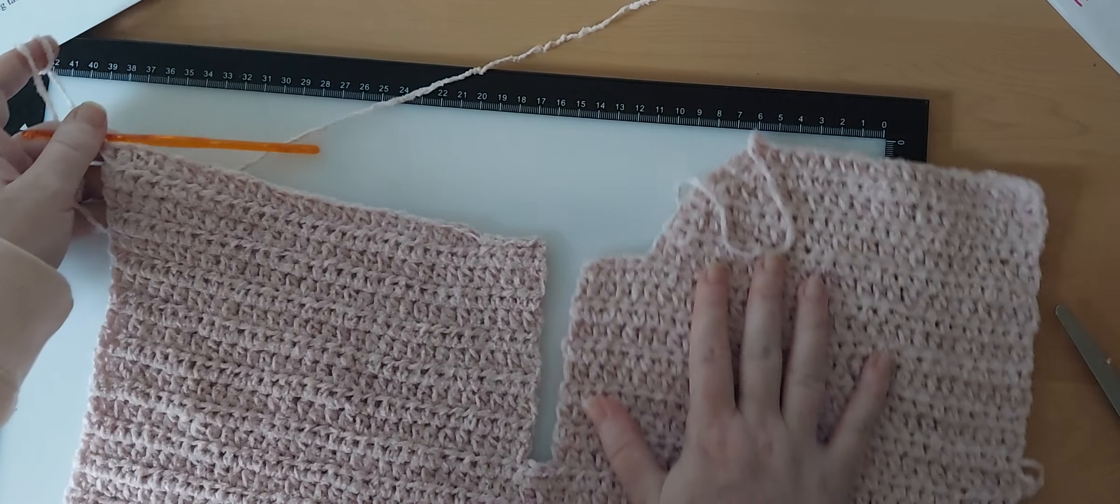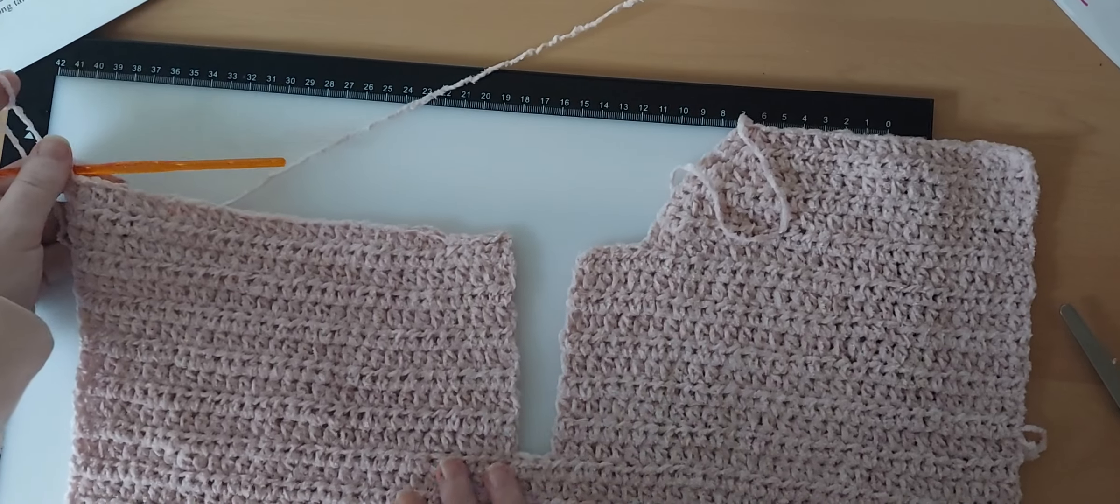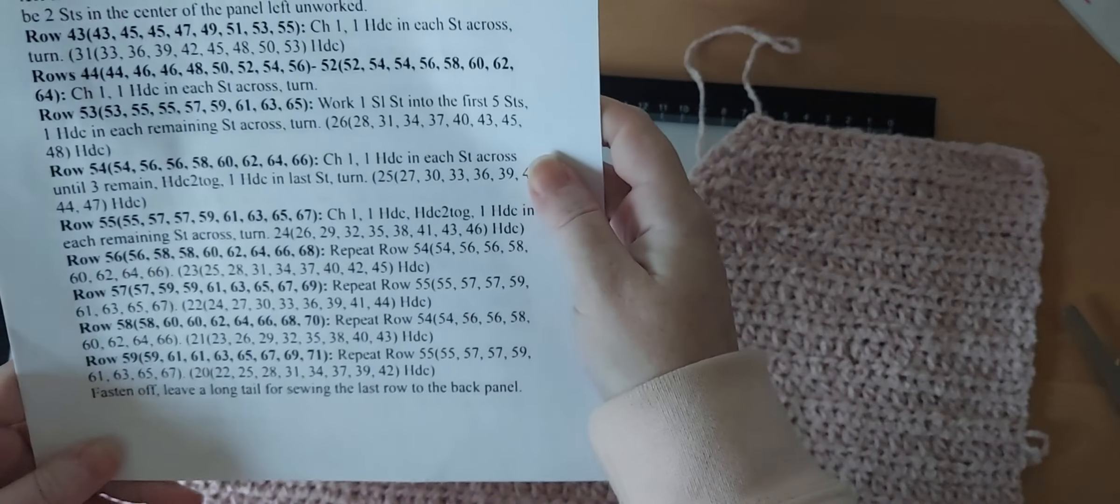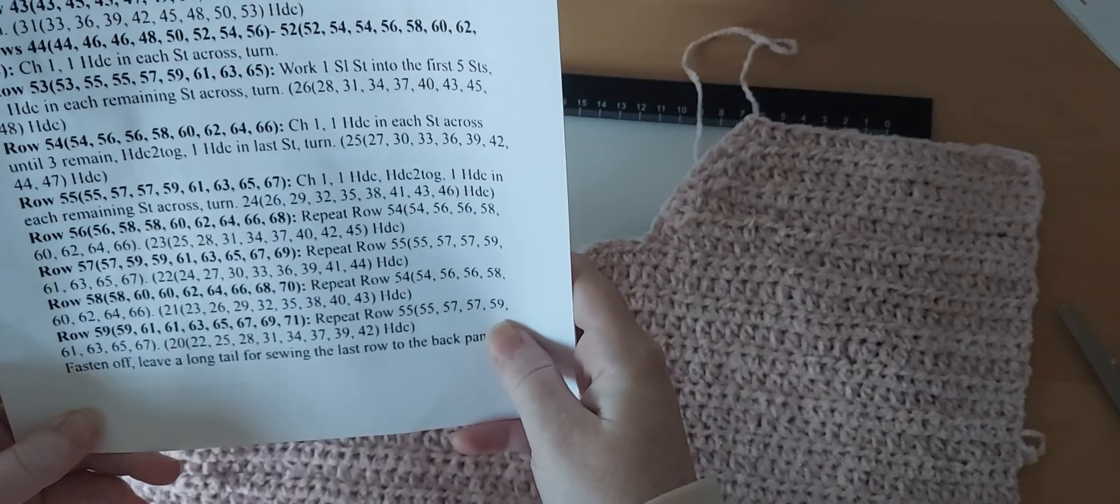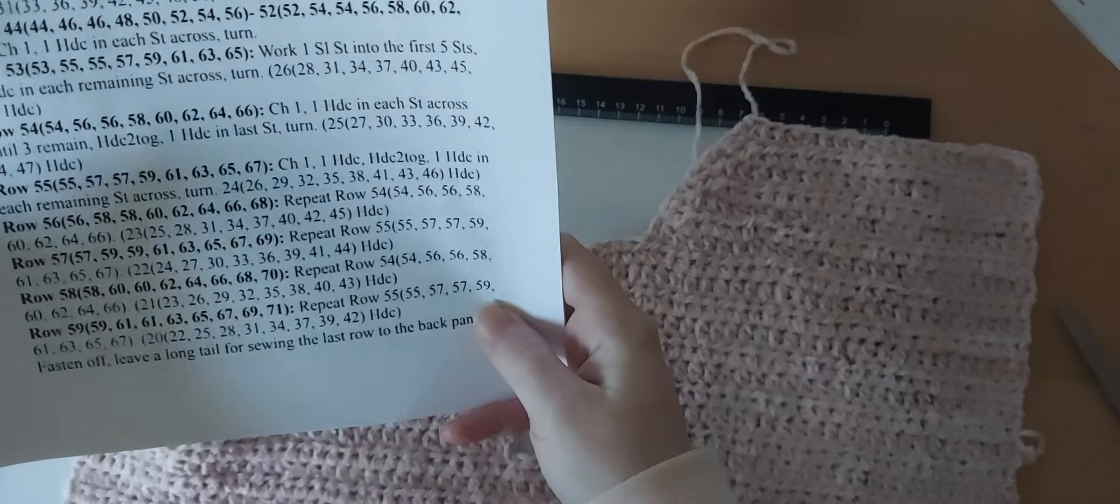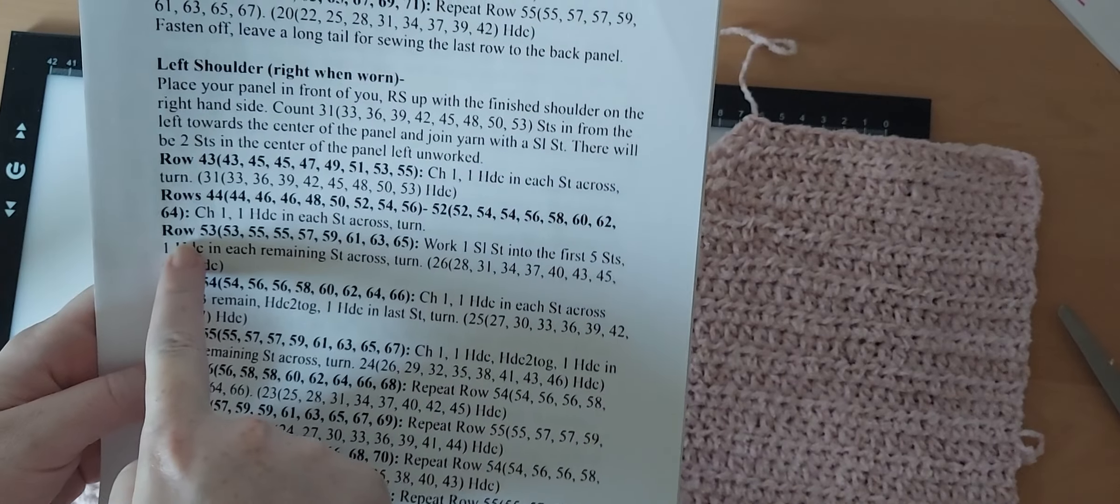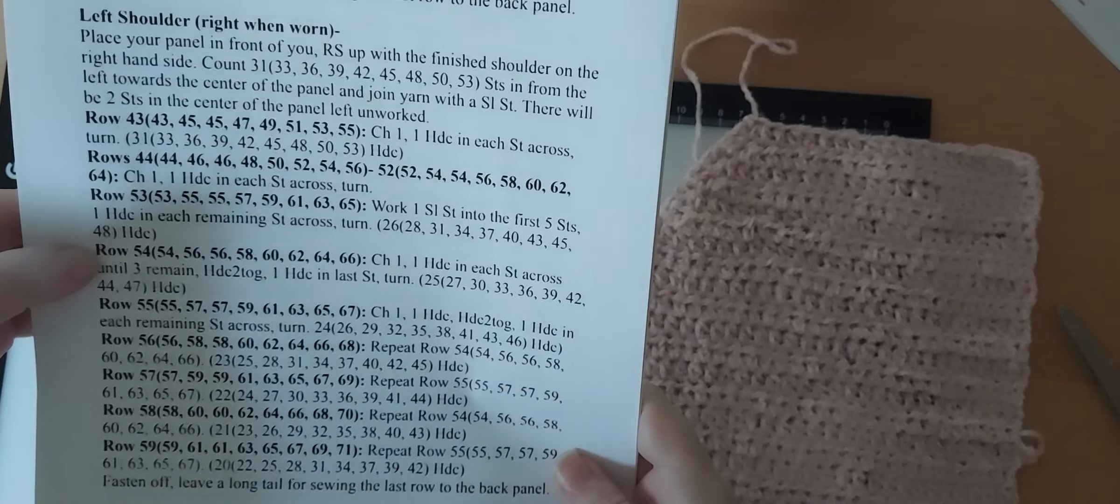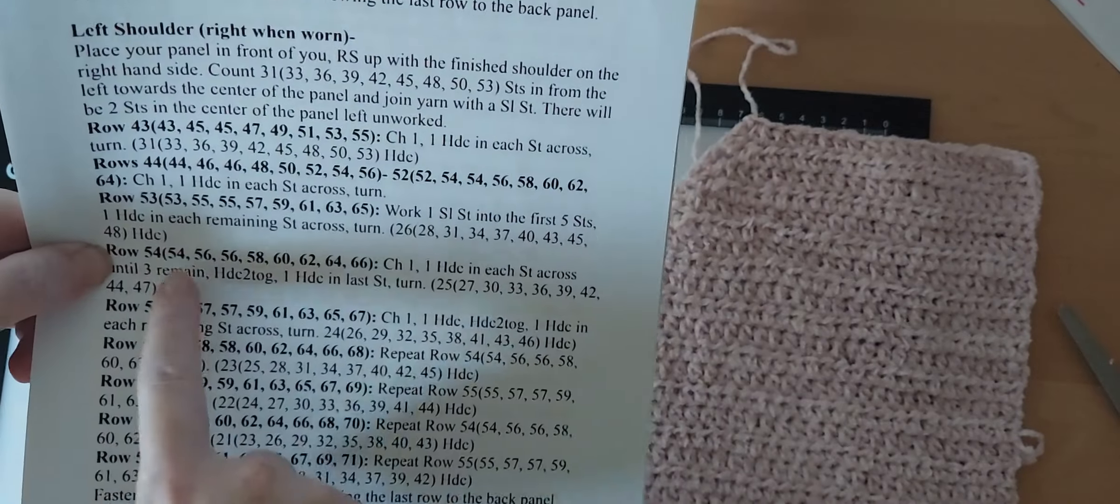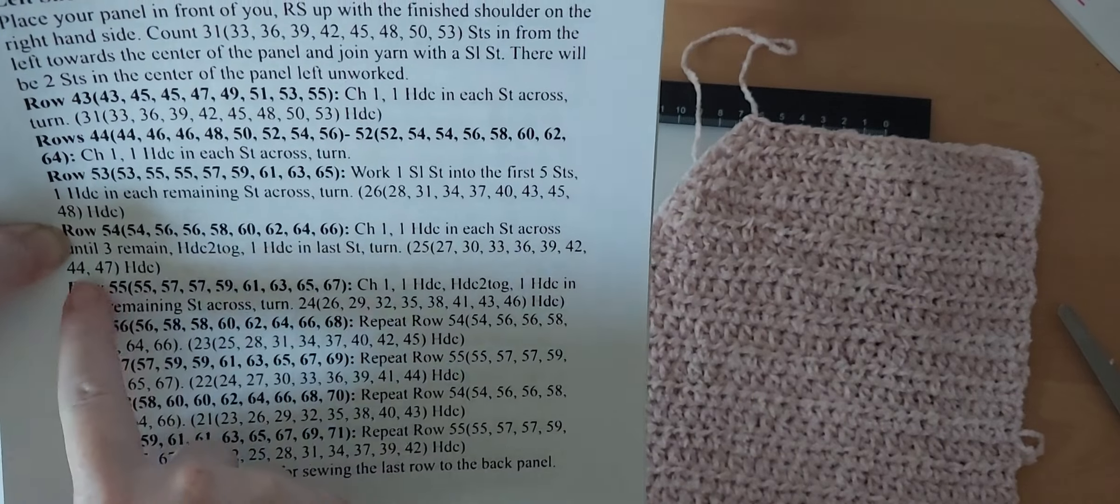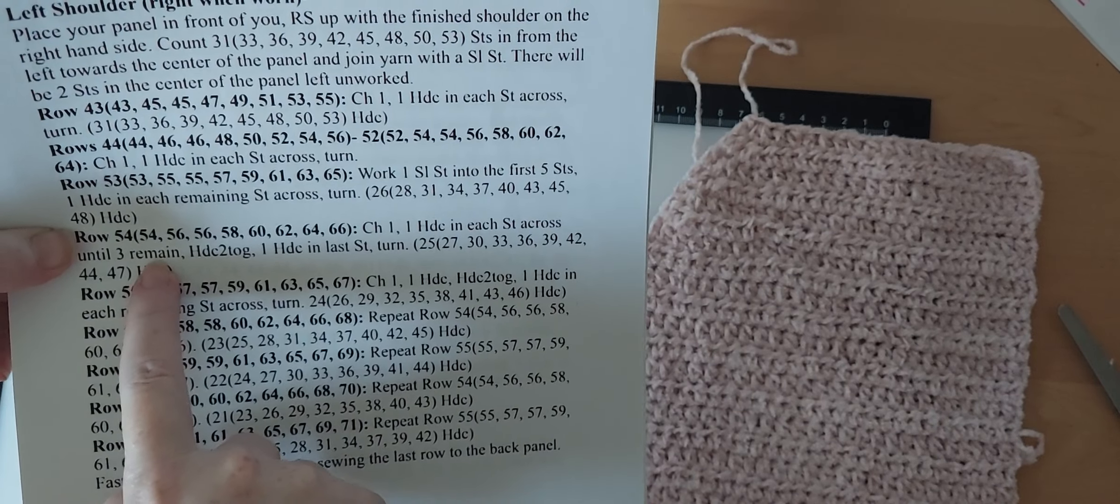Again, the number of half double crochets that you will have in that row will depend on the size that you are making, as it's been throughout the entire pattern. So from this point forward, you are basically going to do exactly what we did on the other side. We just finished up this row, for me row 53.